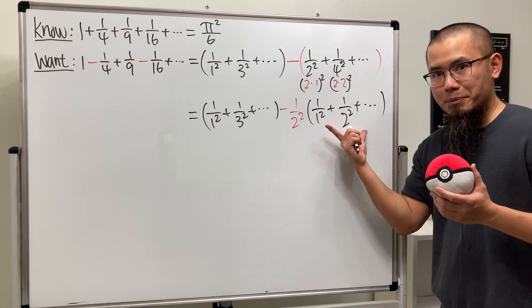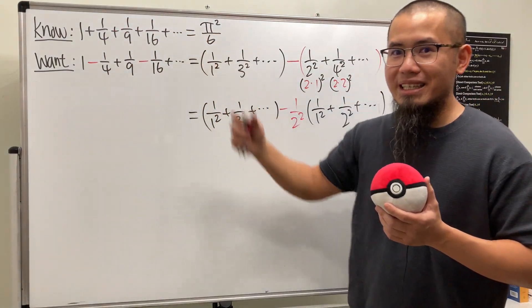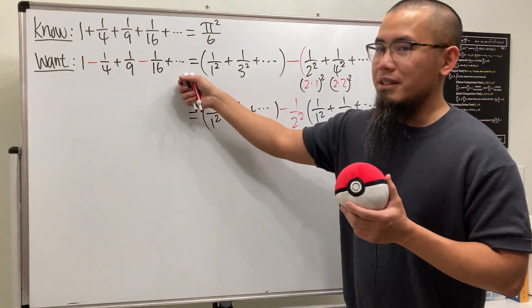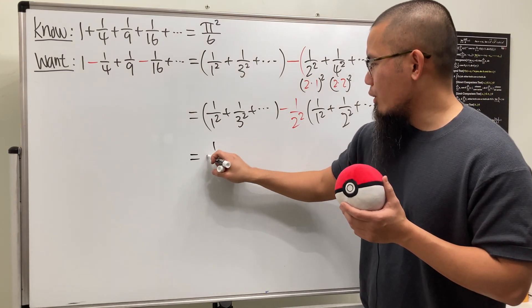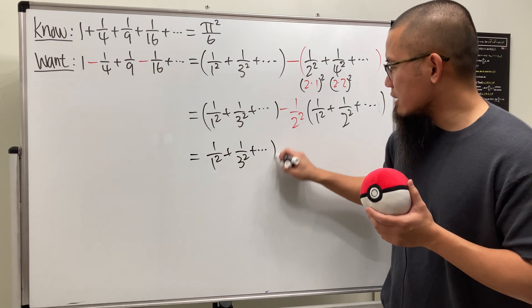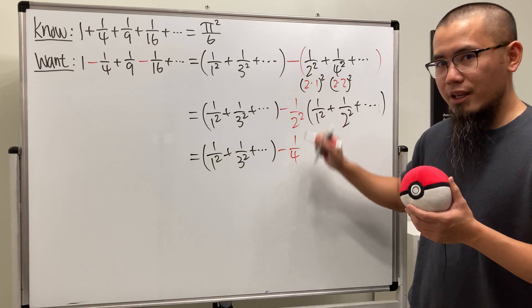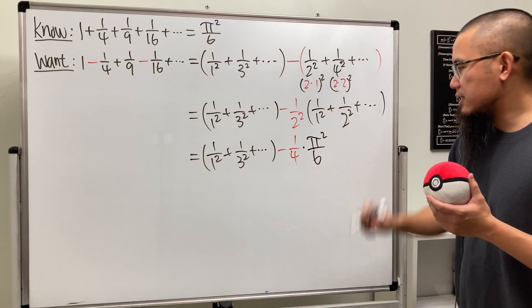Well, what is this? This is exactly what we have right here originally, right? So this series is really cool, because you can see, this series actually has that. So we can actually put this down as 1 over 1 squared plus 1 over 3 squared plus dot dot dot, and then we just have to minus 1 over 4, and then this right here is pi squared over 6. Cool.